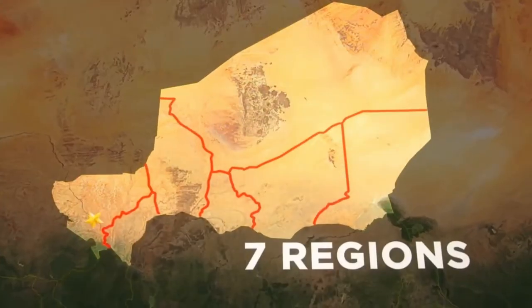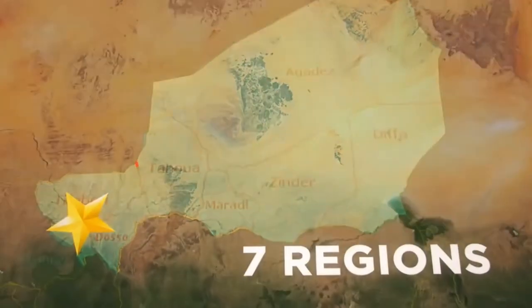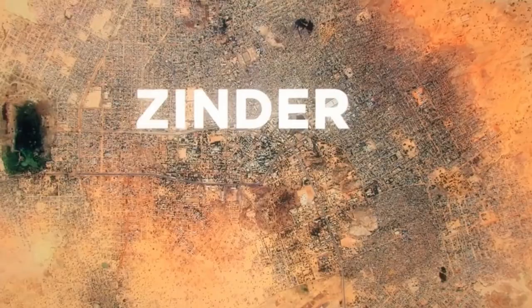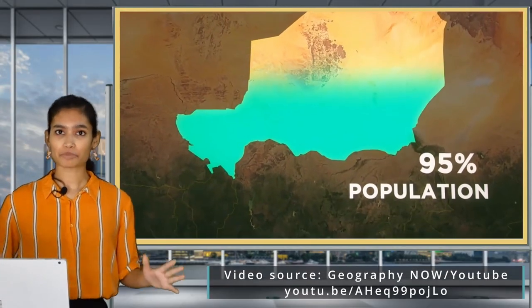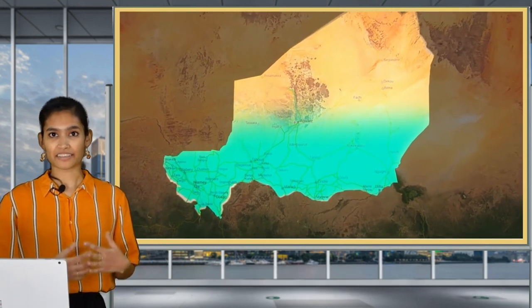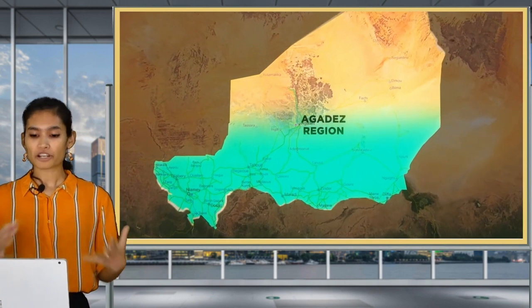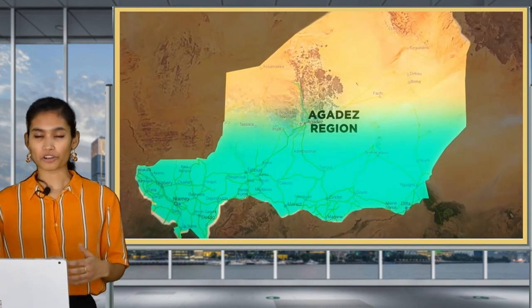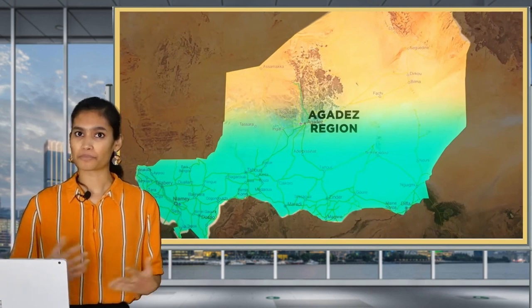Niger is the largest country in West Africa by area. It contains seven regions and one capital district, the city of Niamey which is the largest city, followed by Zinder in the southeast and Maradi in the central south. In fact, 95% of Niger's population is concentrated in the south. The most sparsely populated and largest is the Agadez region in the north. This has important implications for measles transmission.